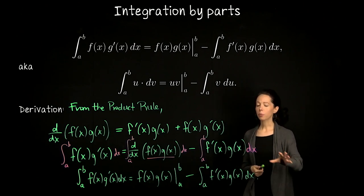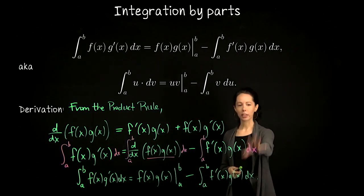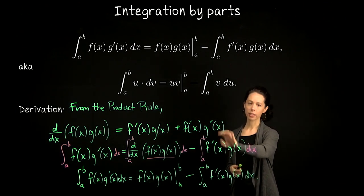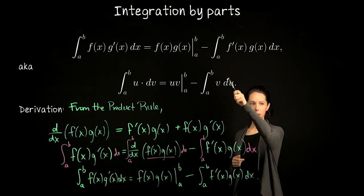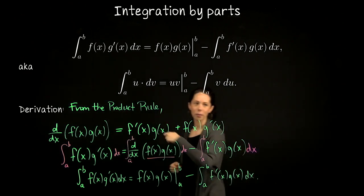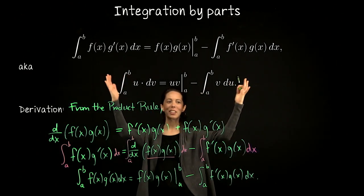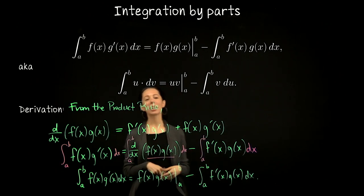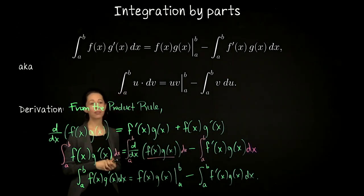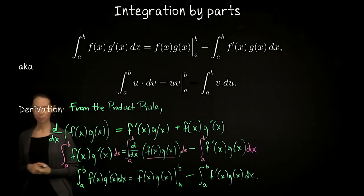Now that we've quickly looked at the formula and the notation, we're going to use the u/dv notation in our examples because it's shorter — you can literally see it's shorter. We're now just going to work through several examples.